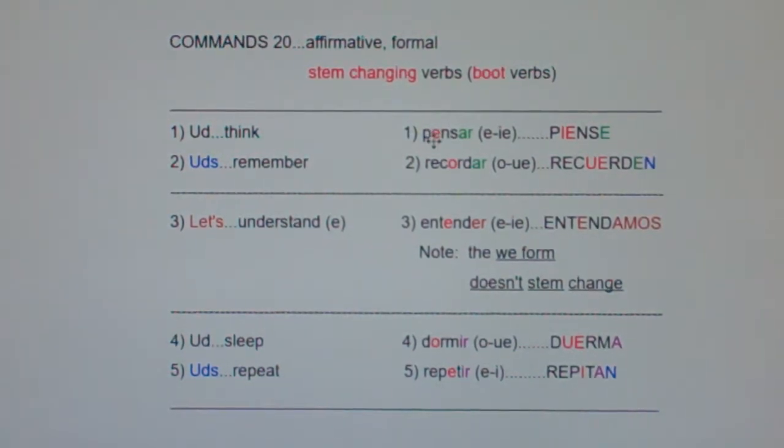Now, remember in the present tense, all of these are stem changers. To form the affirmative formal commands, what's the chant? Everybody: yo form, chop the o, opposite vowel ending. Yo form, chop the o, opposite vowel ending.